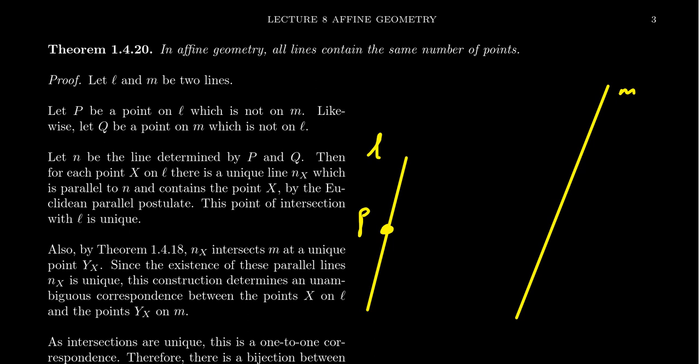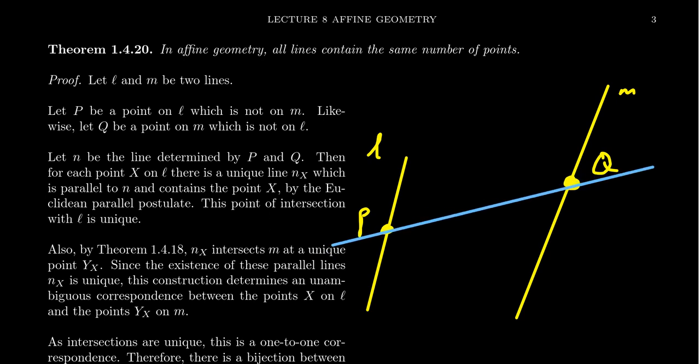Likewise, there has to be a point Q on M that's not on L by the same reasoning. So we have these two points P and Q. We've used secancy to get two points on each line, and line determination to guarantee intersections are unique. We're going to use line determination again to form the line connecting P and Q, which we'll call n — the line uniquely determined by P and Q.